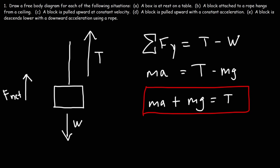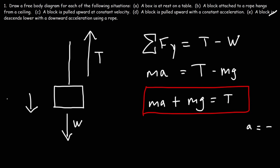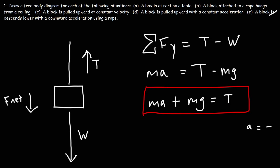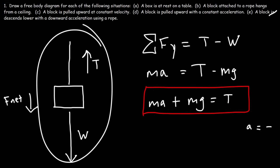What about part E? A block descends with a downward acceleration using a rope. In this case, the acceleration is negative — it's going down. The net force is going to be in the downward direction because it's descending with a downward acceleration. The only way that's going to happen is if W is greater than T. So we make the weight force arrow bigger and the tension arrow smaller. The weight force is greater than the tension force, producing a downward acceleration.